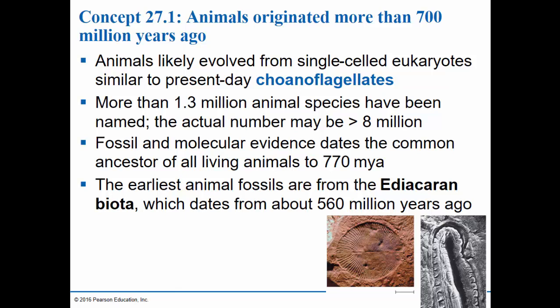The animals have diversified into an amazingly large number of species. More than 1.3 million animal species have been described by scientists. And because scientists are discovering new species at such a rapid rate, they estimate that the total number may even be as many as 8 million or more species.